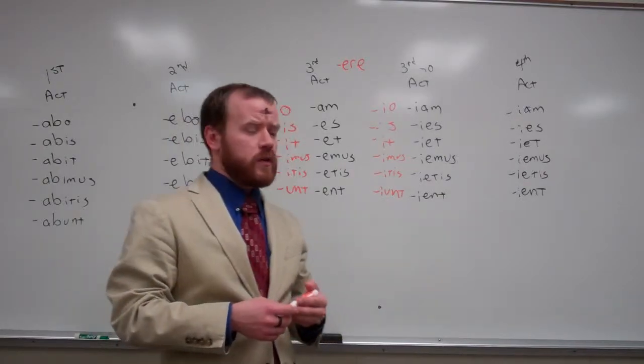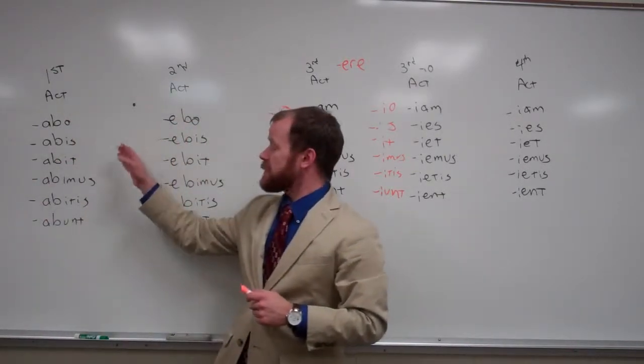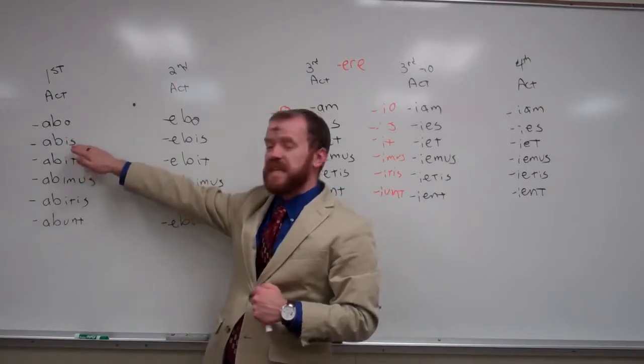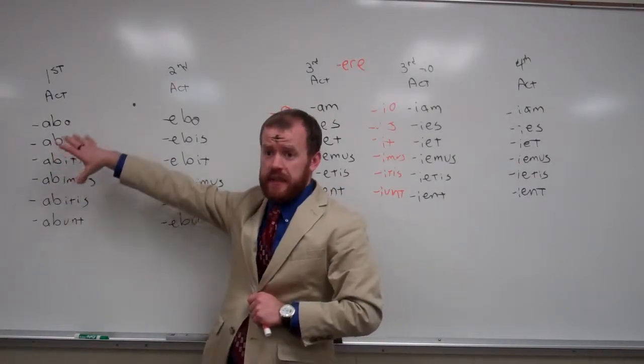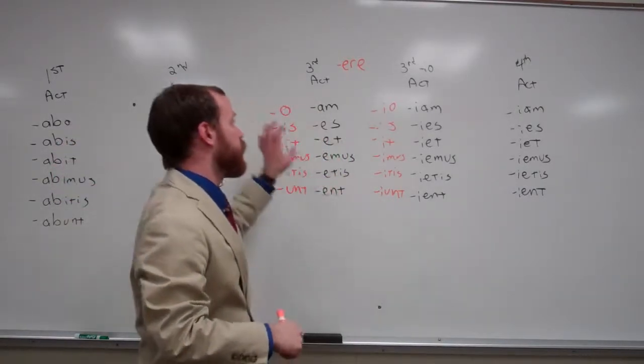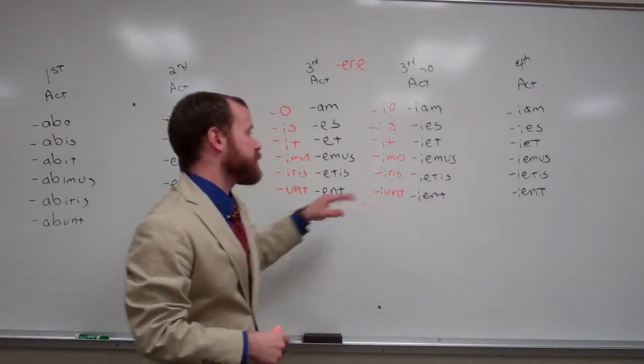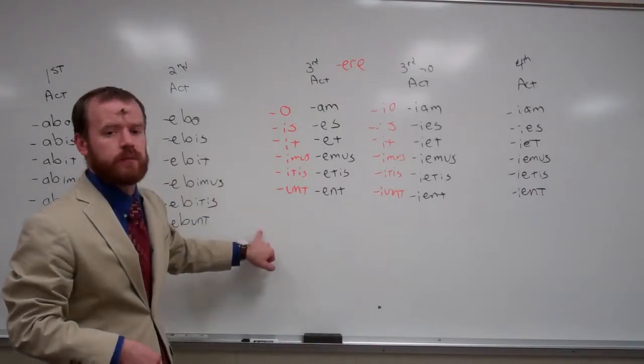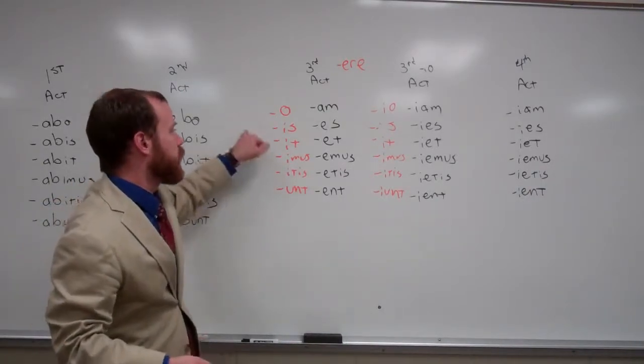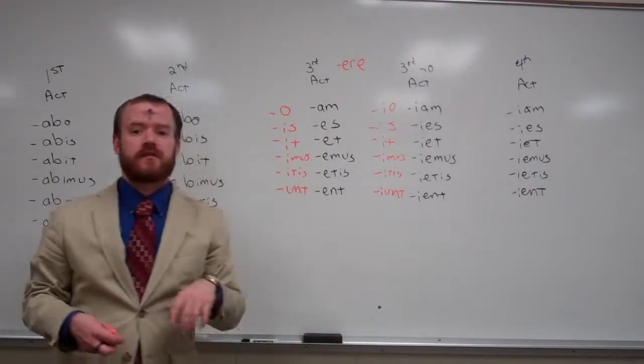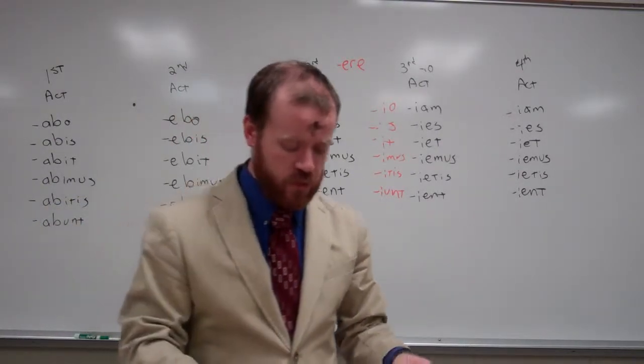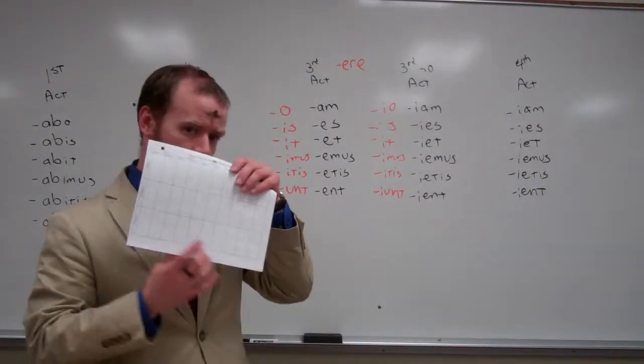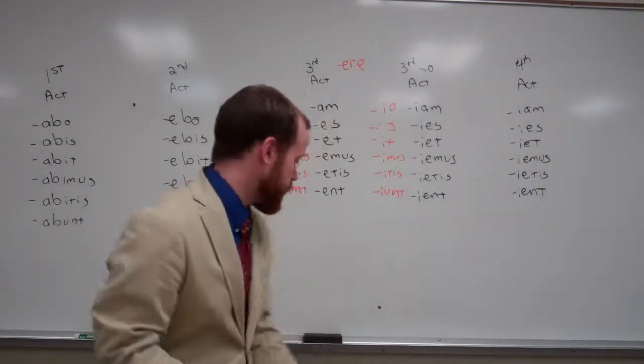So the first and second has the bi in it as an indicator of the future. The third, third io, and fourth has a vowel change. And so the present are here in orange, and you've already seen these. These i's change to e's. And that's the future active indicative. So you should be filling out this bottom row of the chart with all these endings.